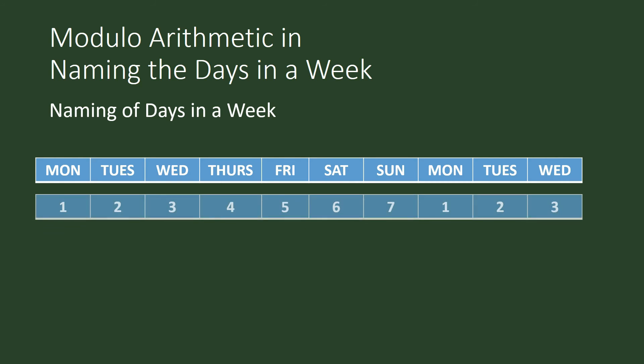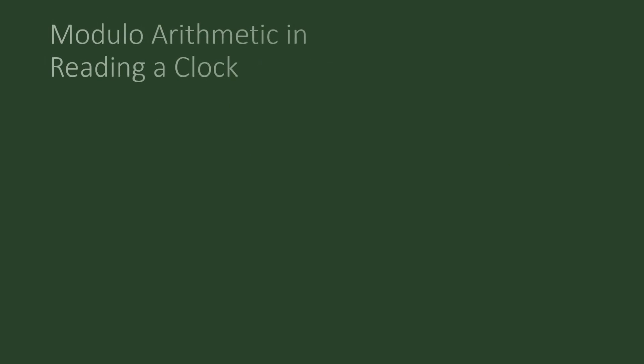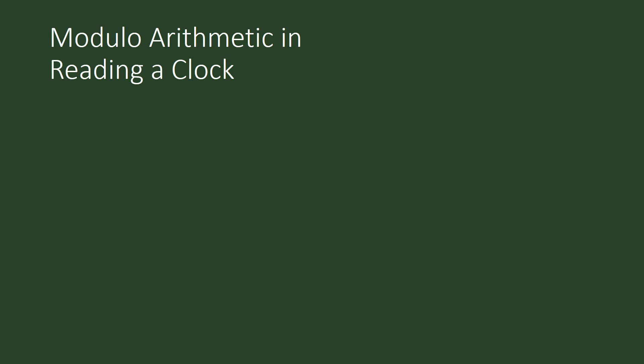We can apply modulo n arithmetic to the days of the week. Monday is 1, Tuesday is 2, Wednesday is 3. When we go to Sunday, Sunday is 7, or we can also make it 0. After Sunday, we begin with 1 again, and 1 is understood to be the first day of the week.